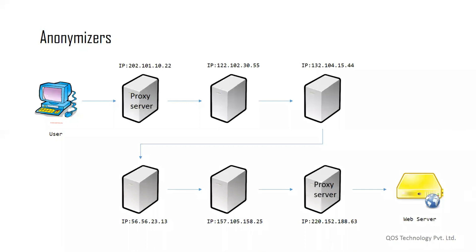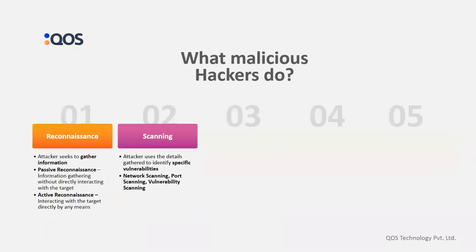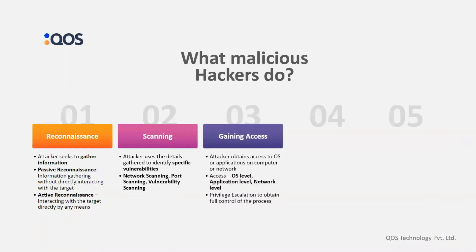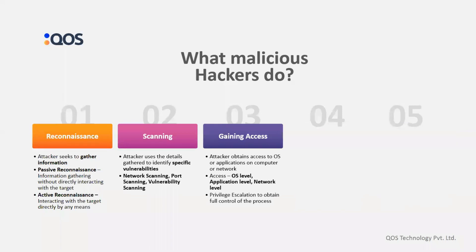Coming back to the other phases: we have understood reconnaissance/footprinting and scanning. The next three steps are gaining access, maintaining access, and clearing tracks. Gaining access is the phase where the real hacking takes place — as seen in the Metasploit exploit demo. Vulnerabilities discovered during reconnaissance and scanning are now exploited to gain access. The attacker gets access to the target machine and performs privilege escalation or achieves full control.